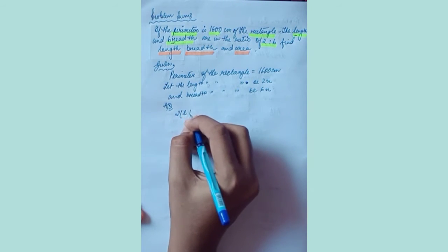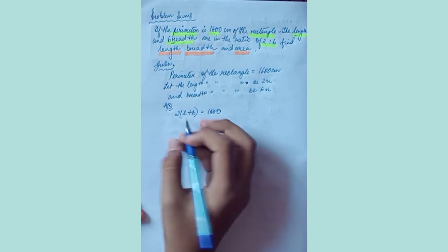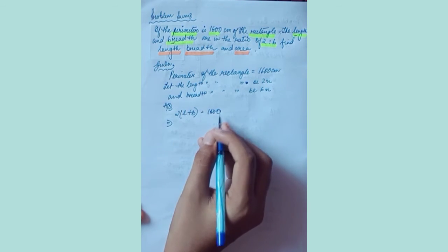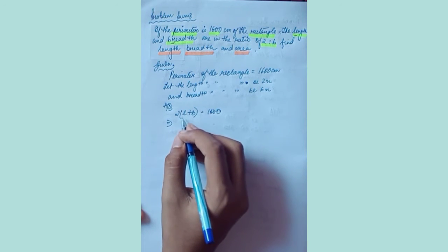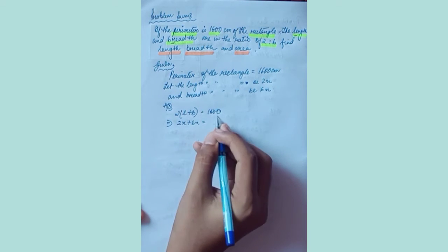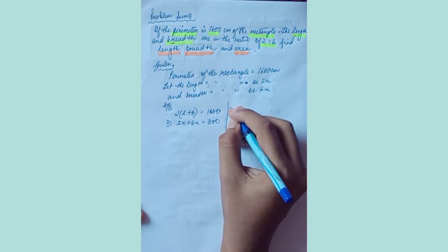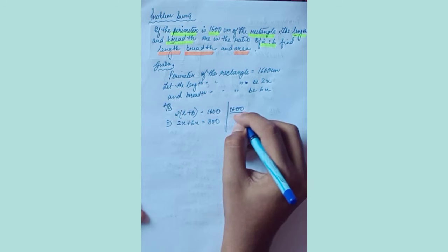The perimeter is given, means 2(l + b) is equal to 1600. Which is equal to, if 2 goes there, l plus b, so 2x plus 6x. If 2 comes here it will be 1600 divided by 2, which will equal to 800.